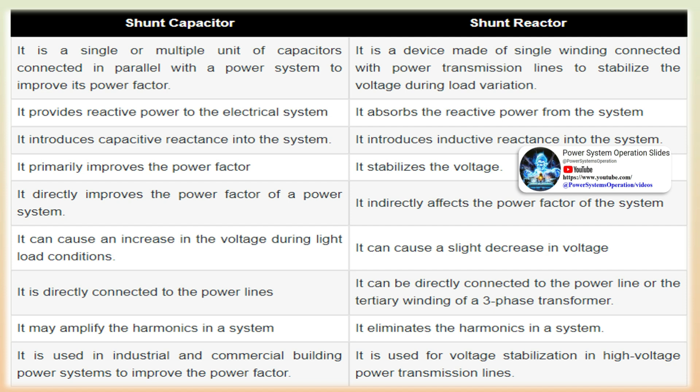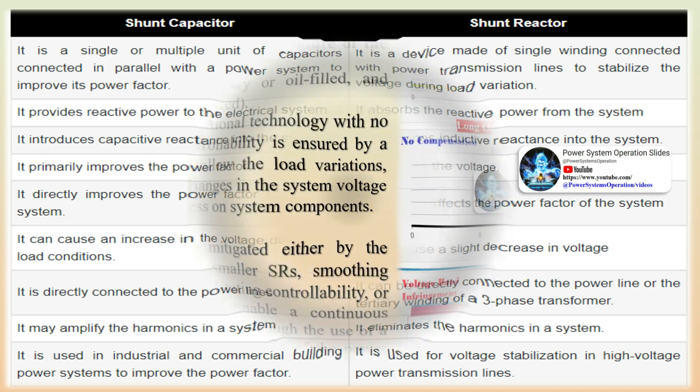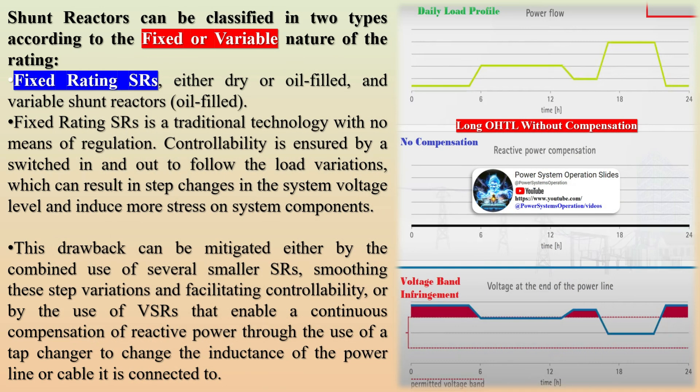Shunt reactors can be classified into two types according to the fixed or variable nature of their rating: fixed rating SRs (either dry or oil-filled) and variable shunt reactors (oil-filled). Fixed rating SRs represent a traditional technology with no means of regulation; controllability is ensured by switching in and out to follow load variations, which can result in step changes in the system voltage level and induce more stress on system components.